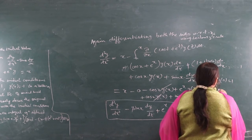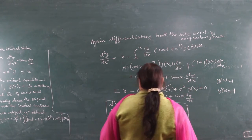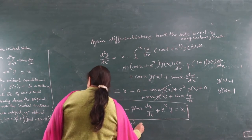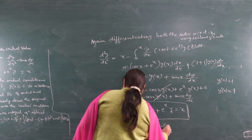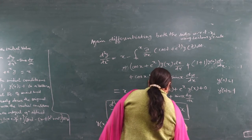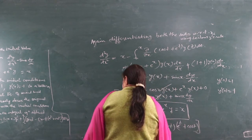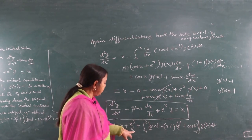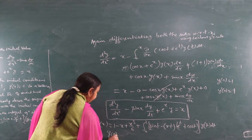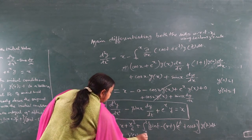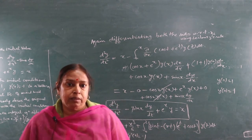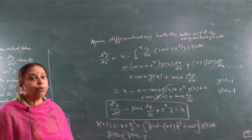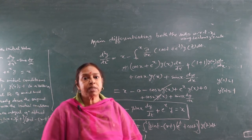We verified that y(0) = 1 and y'(0) = -1 satisfy the initial conditions. We get the same differential equation from the integral equation which we had obtained. In this exercise, we converted the differential equation to an integral equation and then derived the original differential equation back from the integral equation.